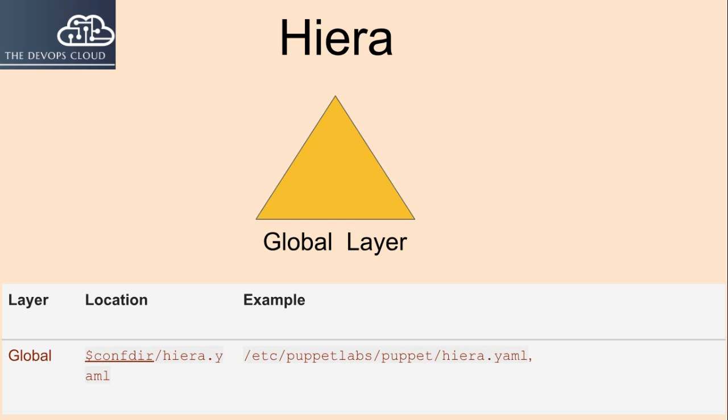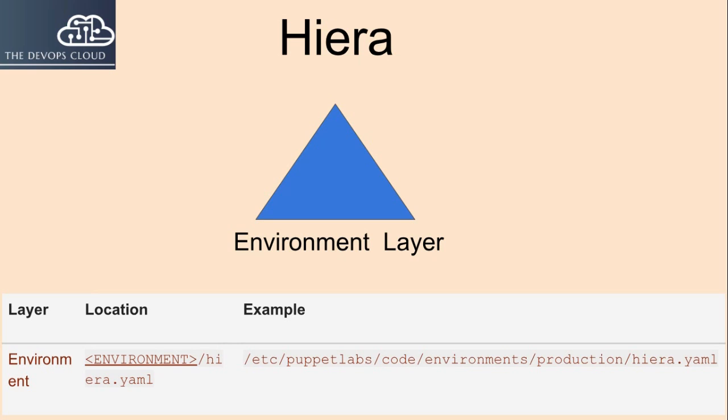All normal data should be specified in the environment layer. The configuration file for the environment layer is located by default at the environment directory's hiera.yaml — for example, for the production environment the path will be /etc/puppetlabs/code/environment/production/hiera.yaml. The environment layer is where most of your Hiera data hierarchy definition happens. Every Puppet environment has its own hierarchy configuration which applies to nodes in that environment.